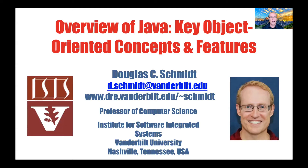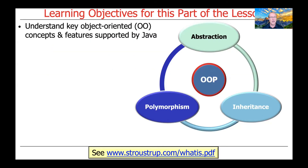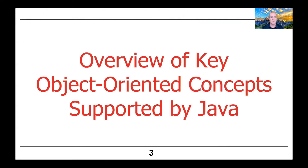We'll continue our overview of Java by giving a summary of some of its key object-oriented concepts and features. Although we'll be focusing largely on functional programming in these lessons, it's important that you have a grasp of its key object-oriented concepts and features as well.